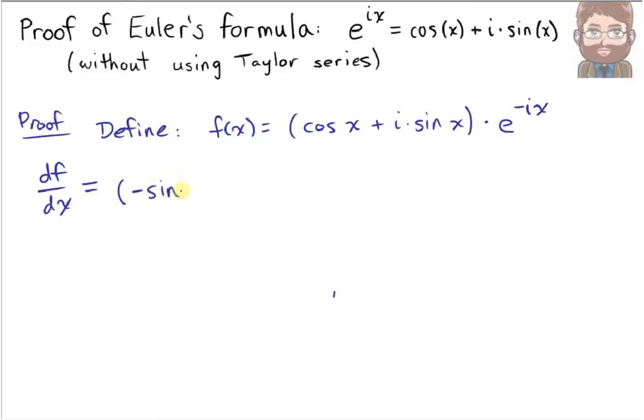So the derivative of the first part is negative sine x plus i times cosine x times the second function e to the negative ix, plus the first function cosine x plus i sine x times the derivative of the second function which is negative i e to the negative ix.